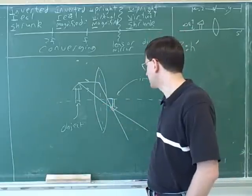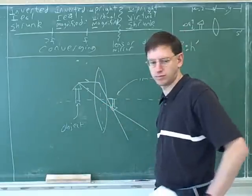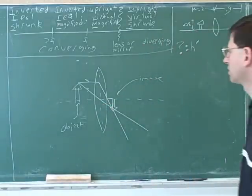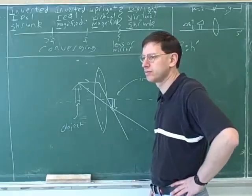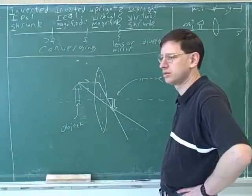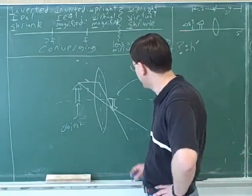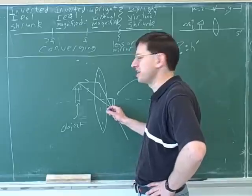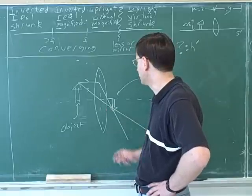Alright, so let's say we have this object and this image. It's an image, and I picked it a little messy, but the image is kind of right over here, where these two outgoing light rays converge.